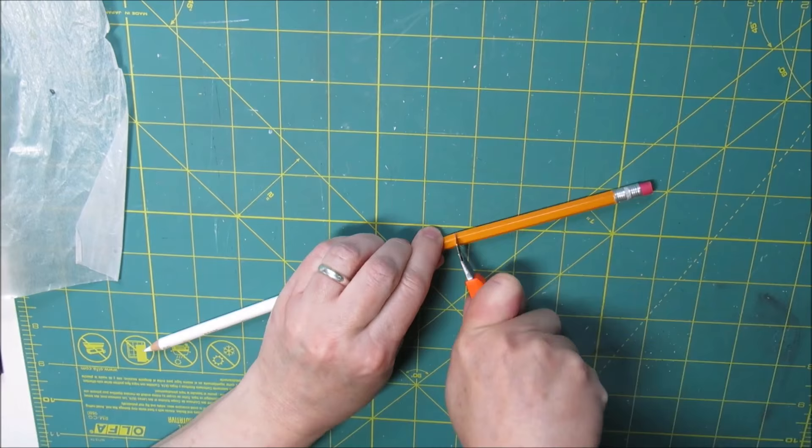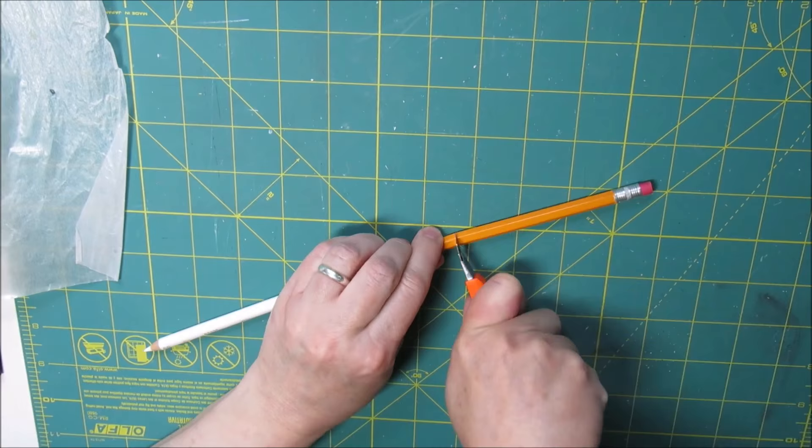But you can also, before you use those new graphite pencils, cut them in half and turn one pencil into two extenders. That works just as well.